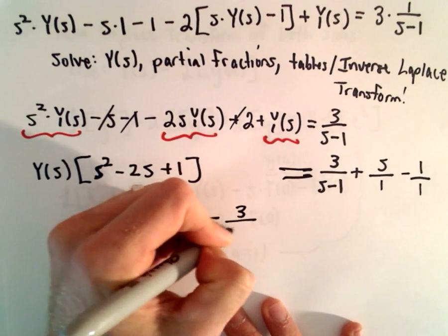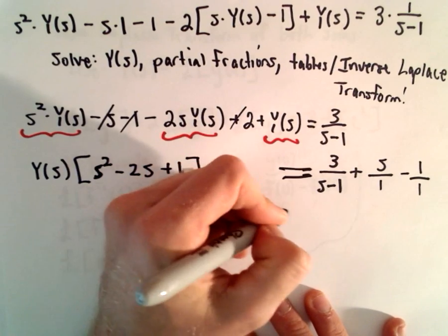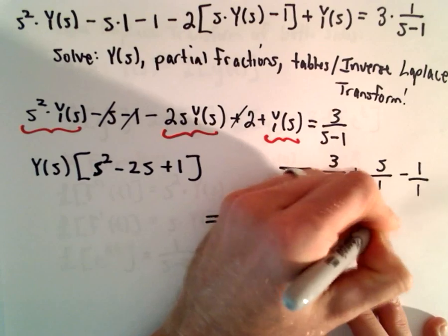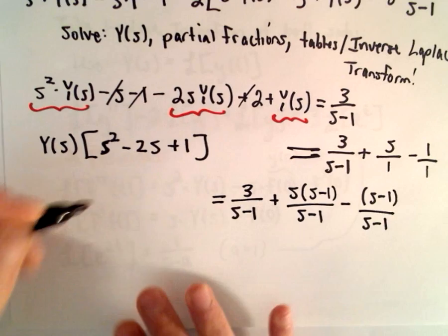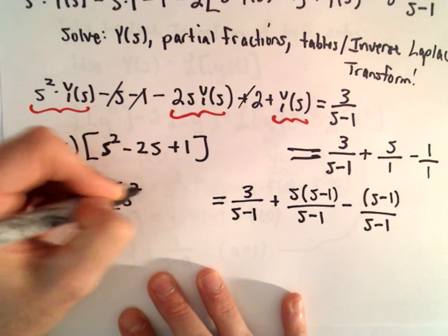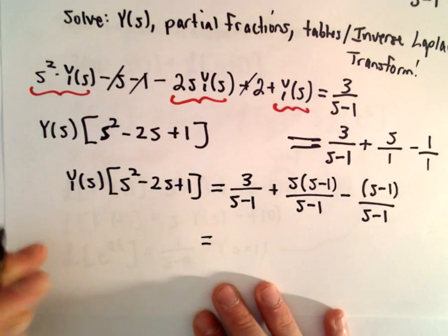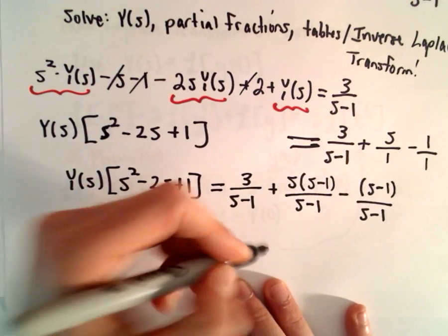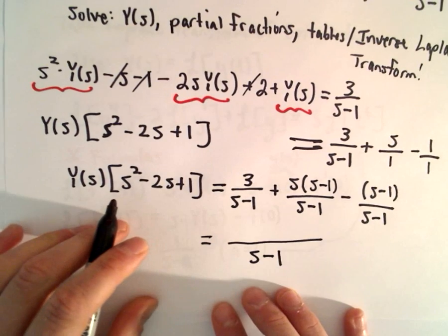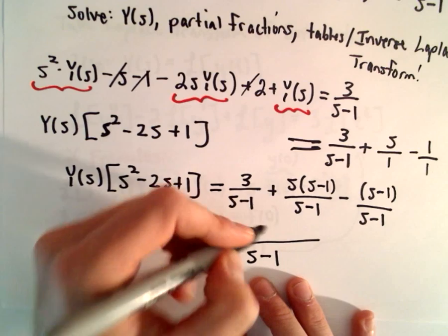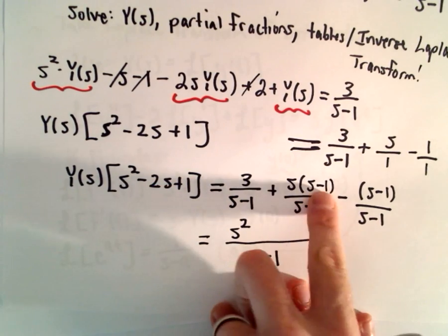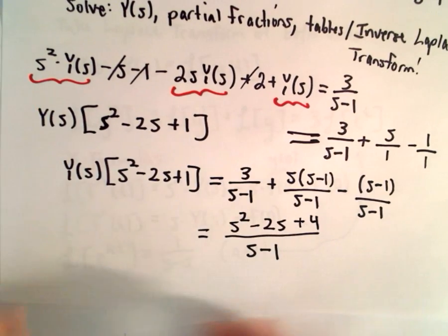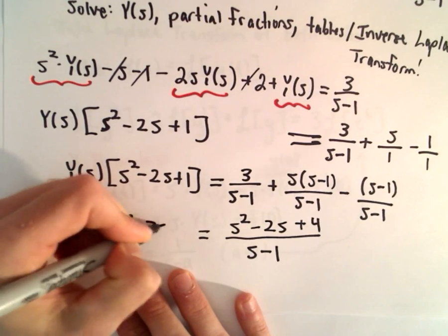On the right side I'm just going to get common denominators, so the second two terms get multiplied top and bottom by s minus 1. We would then have minus s times s minus 1 and minus 1 times s minus 1. When you simplify the numerator it looks like we're going to have s squared minus 2s plus 3 plus 1, giving s squared minus 2s plus 4. So we still have Y of s times s squared minus 2s plus 1.